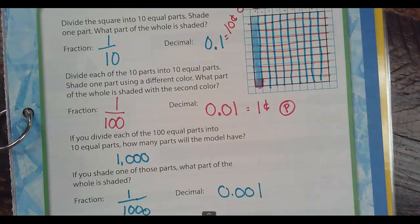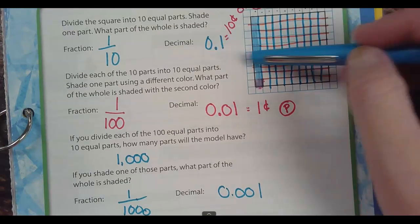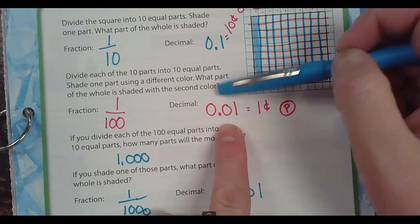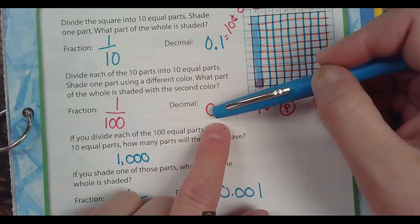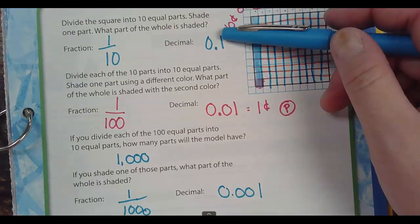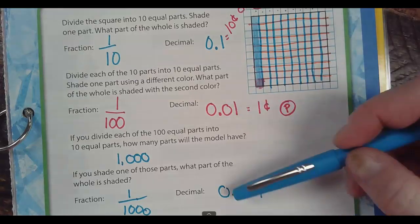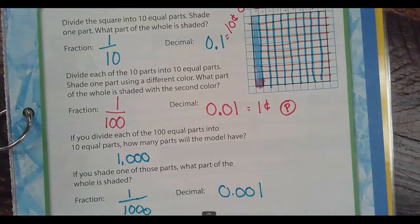The more zeros that are between the decimal point and the number, the smaller the number gets. So this is worth a dime — just one place to the right of the decimal. This is worth a penny — two places to the right. This is a thousandth — three places. If I added another zero, is my number going to get bigger or smaller? Smaller. And it would be one ten-thousandth.